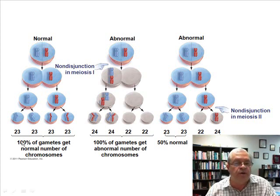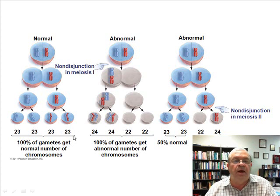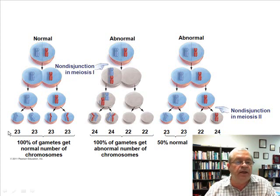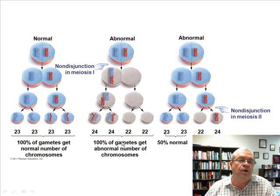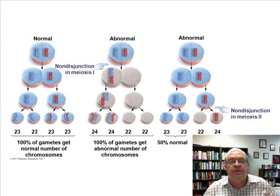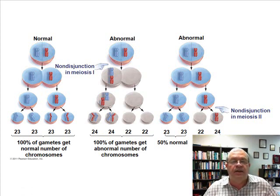Normal meiosis produces 23 chromosomes per gamete — half of each pair. Anything different from 23 is abnormal. Non-disjunction can result in one too many or one too few chromosomes, causing certain chromosomal abnormalities, one of which results in Down syndrome.